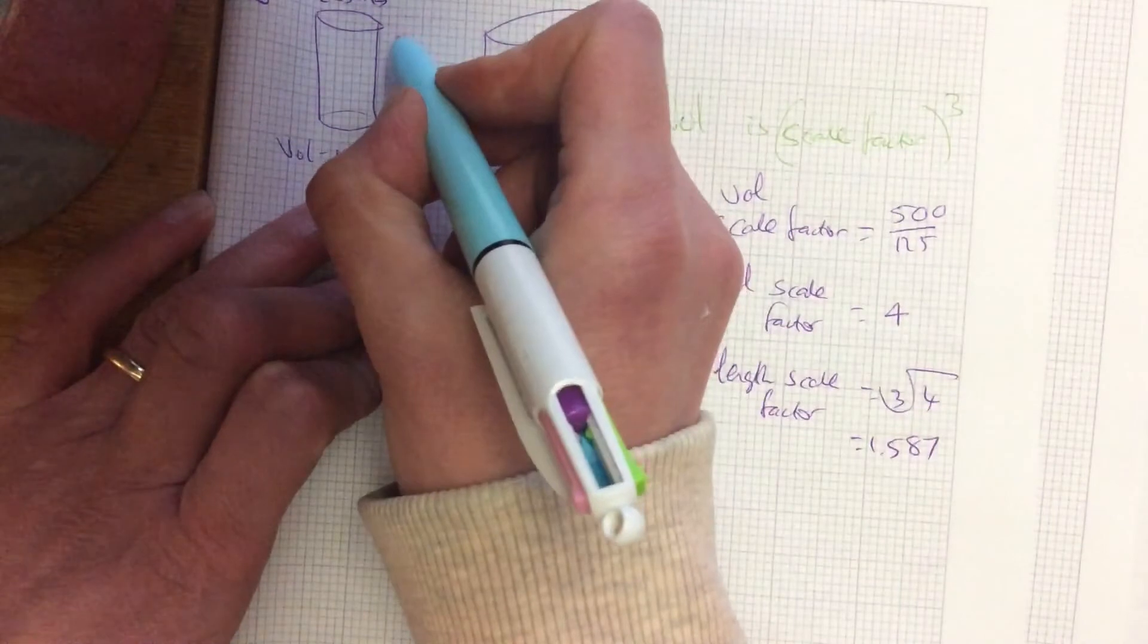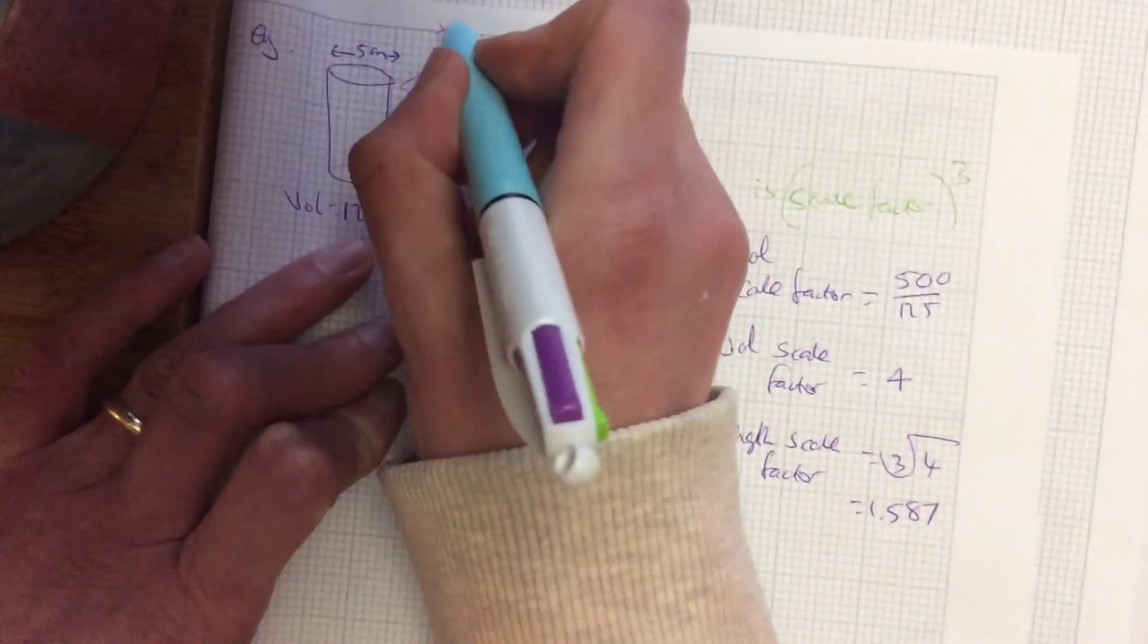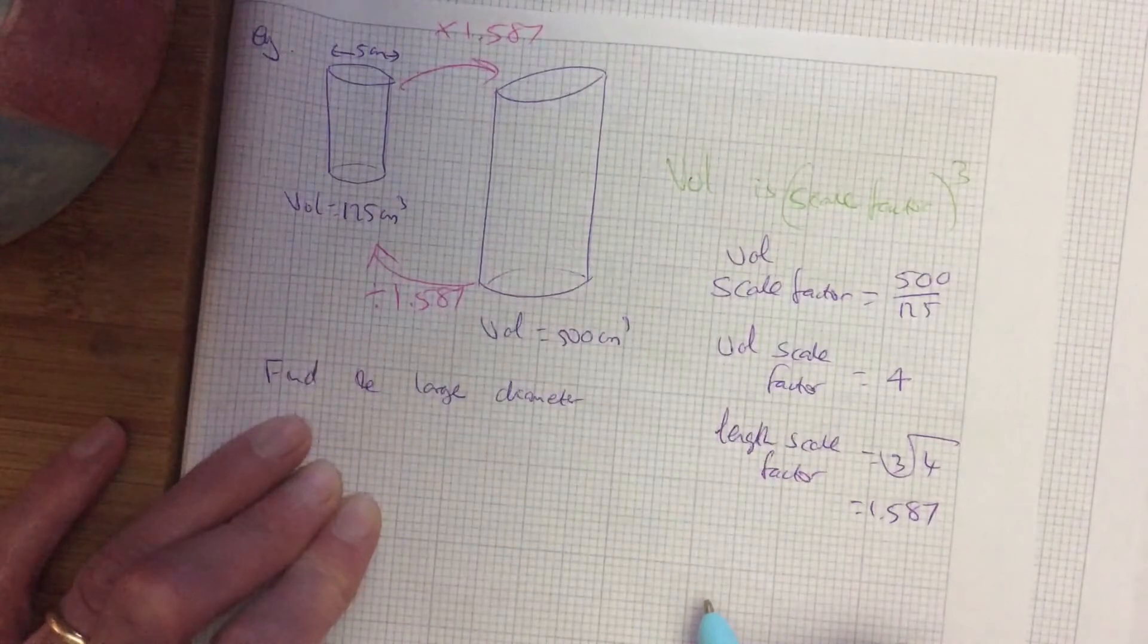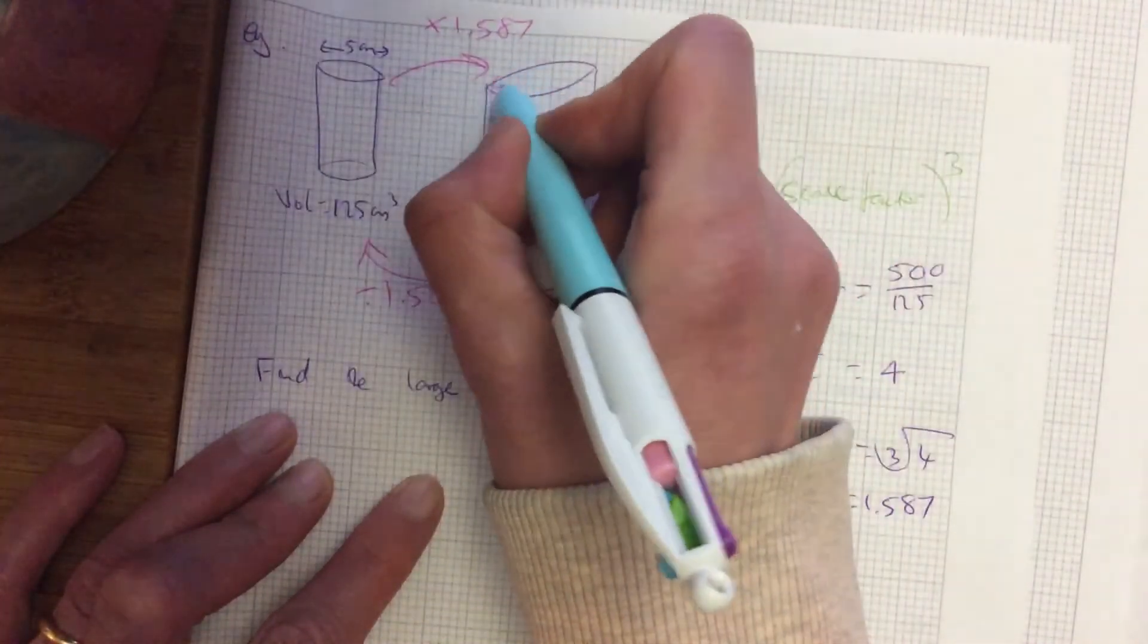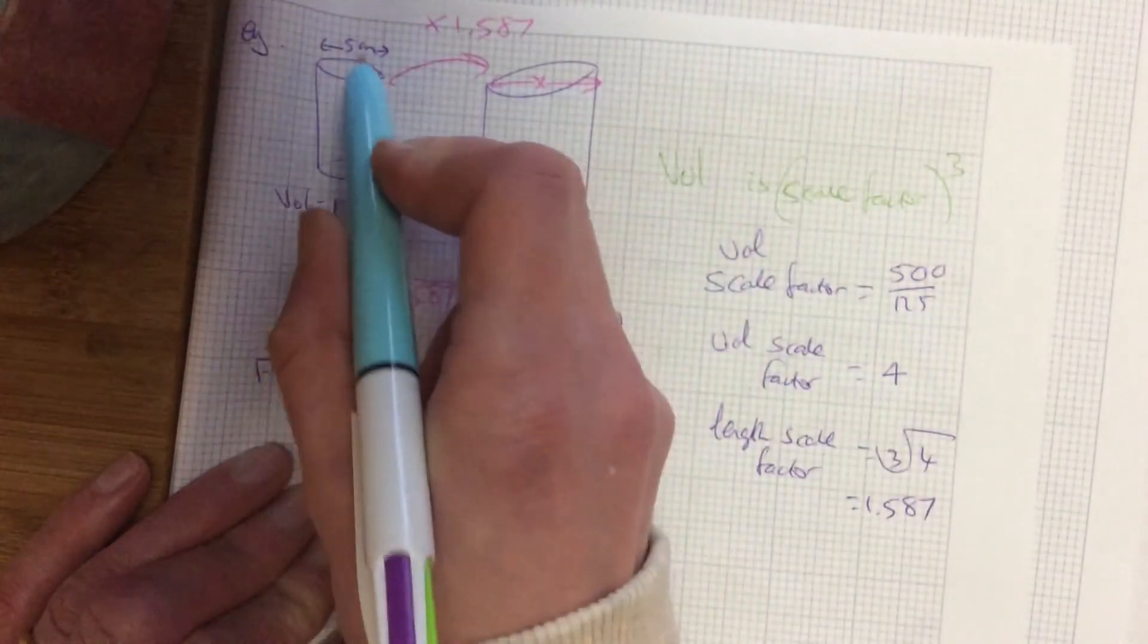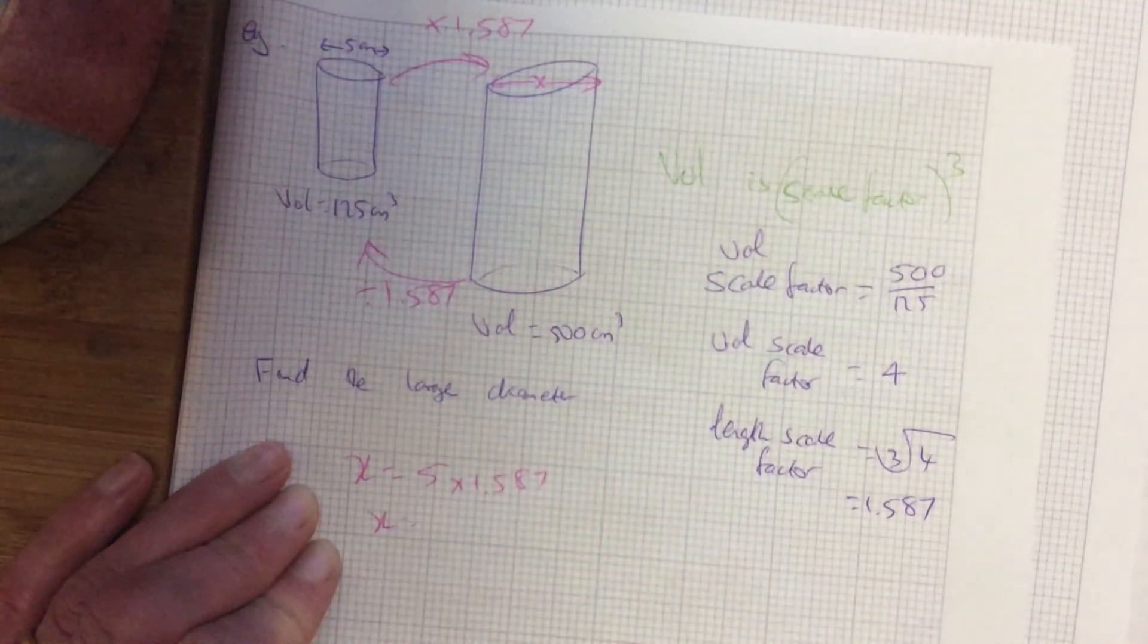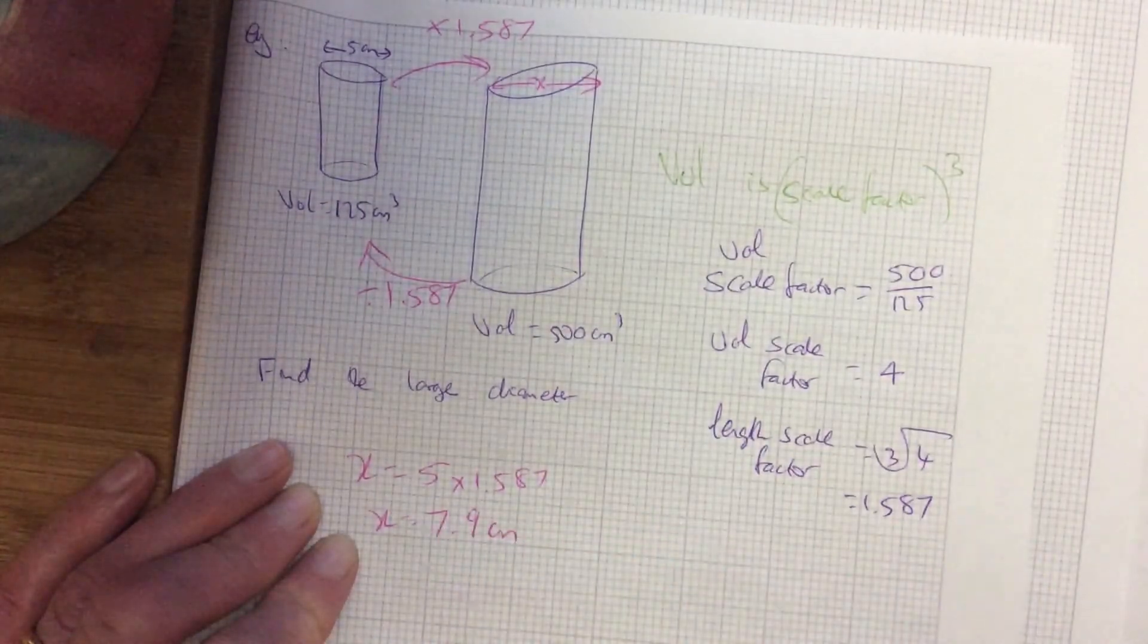So basically, as you go up this shape, you times by 1.587. And as you go back, you divide by 1.587. The question wants to find the large diameter. So it's looking for this length. So x is the scale factor times 5 or 5 times 1.587. So just on your calculators, times that by 5 to give you 7.9 centimetres.